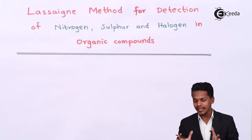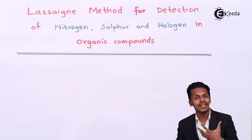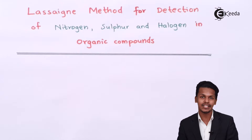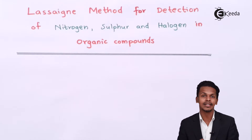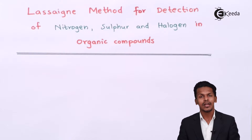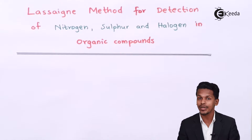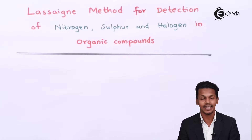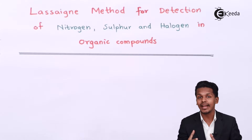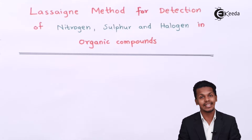So what is this method and how do we perform it to estimate these elements in the organic compound? In this method we are going to use the sodium fusion test. Let me give a brief idea about Lassaigne's method for the detection of these elements.